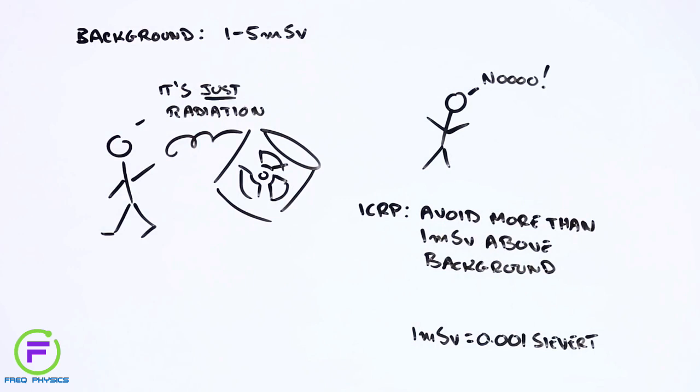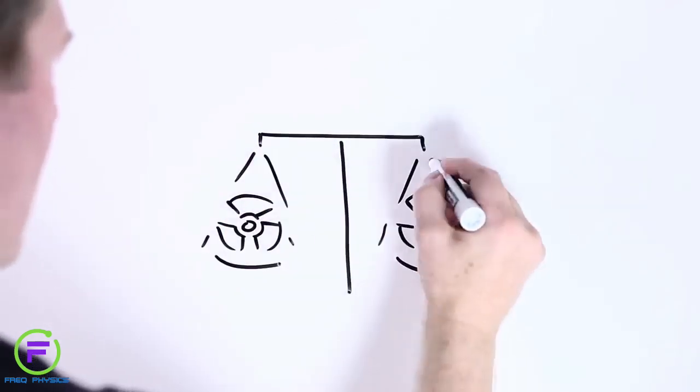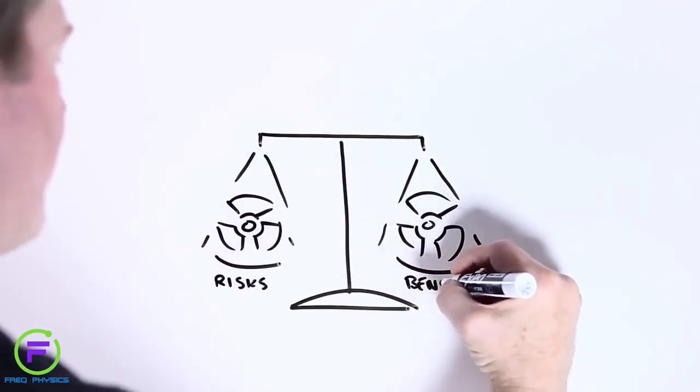But at least sieverts help us weigh up the pros and cons of radiation exposure, and they allow us to differentiate between exposures that are probably okay and those that are not.